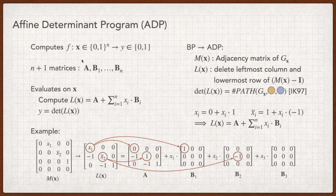An ADP consists of n plus 1 matrices along with an evaluate function. The ADP is also evaluated in two steps. First, it computes L of x which equals A plus sum of xi bi from i equals 1 to n. Second, it computes the determinant of L of x and feeds it to the evaluate function as the input.